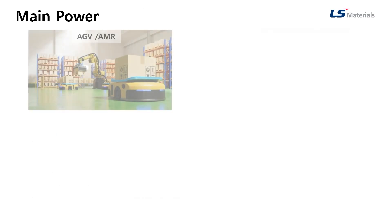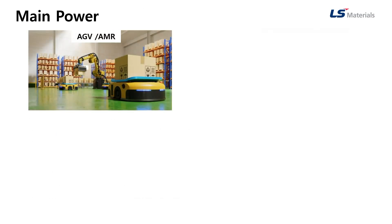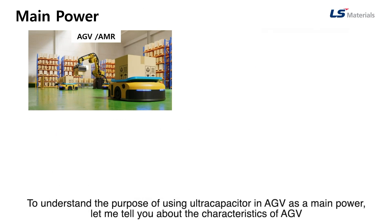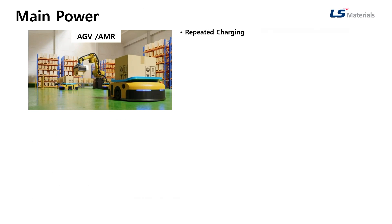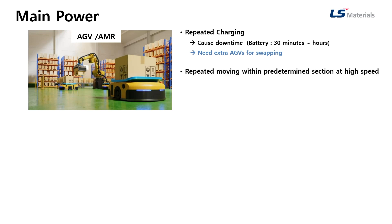As a main power source, Ultra Capacitor can be used in AGV. To understand the proposal of using Ultra Capacitor in AGV as a main power, let me explain the characteristics of AGV. First, AGV must be regularly recharged during working hours, which causes downtime. To reduce this downtime, extra AGVs are needed. For example, if 100 AGVs are required for working, then 120 to 130 machines are installed to swap in during charge time. Second, AGV repeatedly moves within a fixed area at high speed. This frequent bursts of power and continuous energy use keep draining battery life.